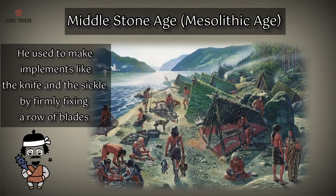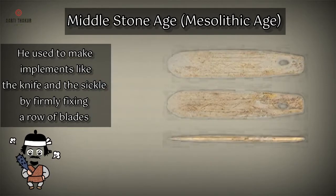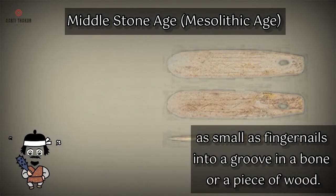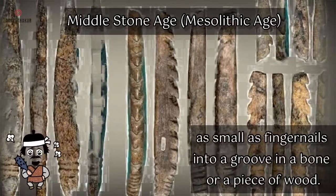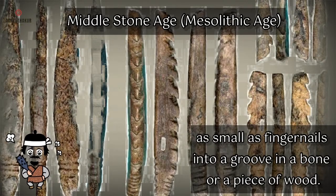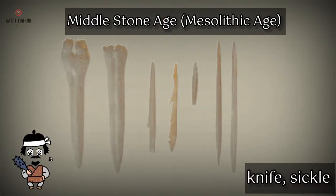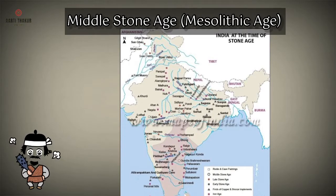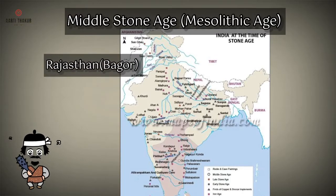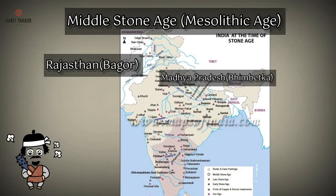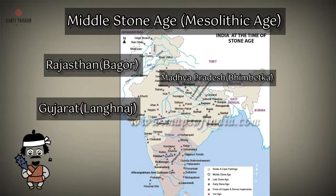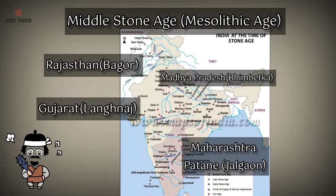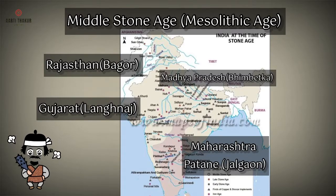He used to make implements like the knife and the sickle by firmly fixing a row of blades as small as fingernails into a groove in a bone or a piece of wood. Many sites of the middle stone age have been found in India. Among them, Baghor in Rajasthan, Bhimbetka in Madhya Pradesh, Langnaj in Gujarat, and Patan in Jalgaon district in Maharashtra are the well-known ones.